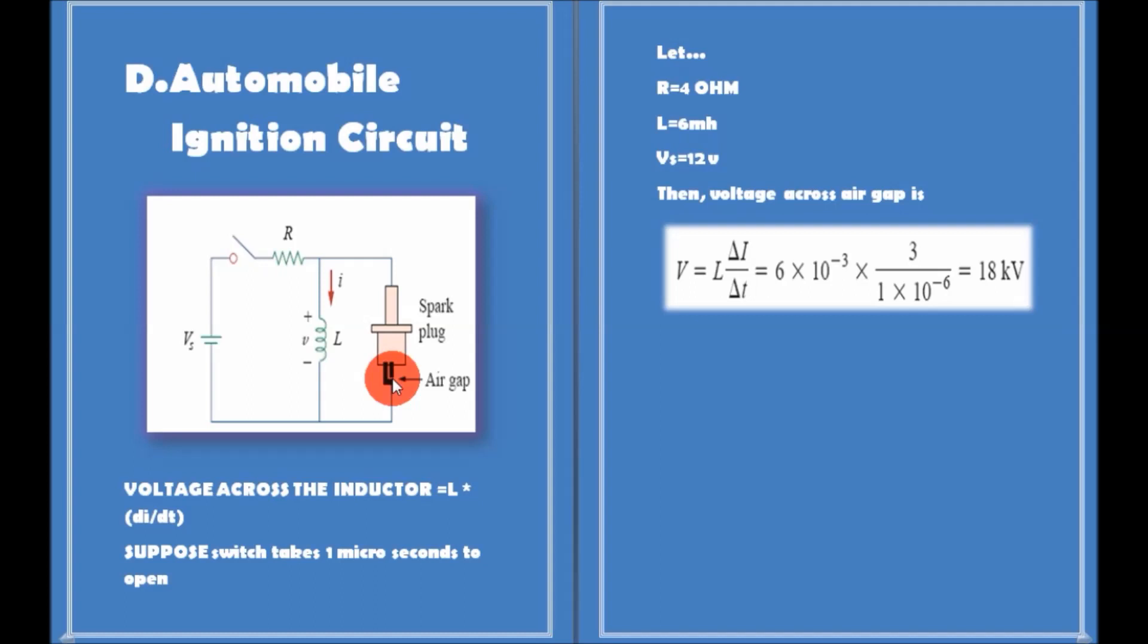By creating a large voltage, around thousands of volts, between the electrodes, a spark is formed across the air gap, thereby igniting the fuel.